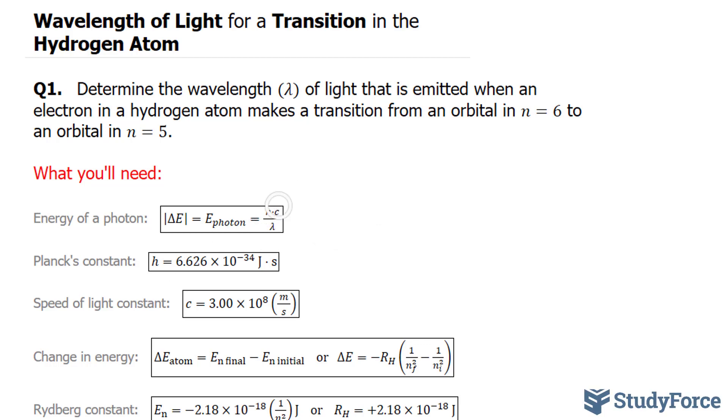H represents Planck's constant, C represents the speed of light, and lambda is our target. So eventually we'll need to use some algebra where we manipulate this equation and have lambda equal to everything else.